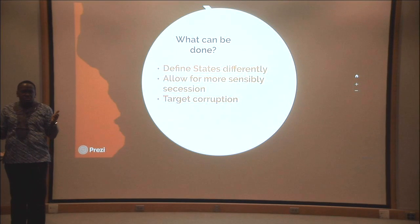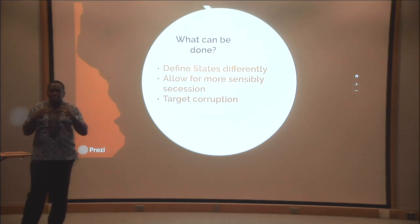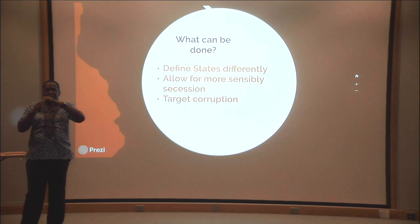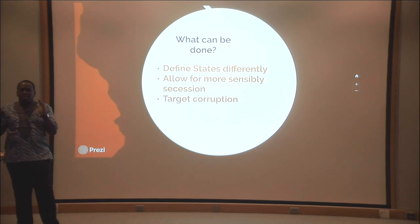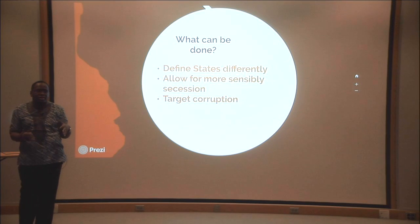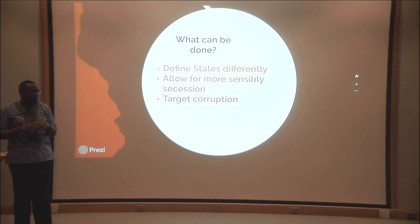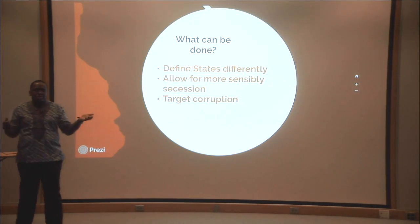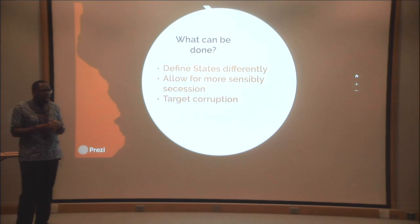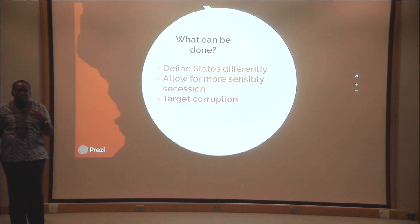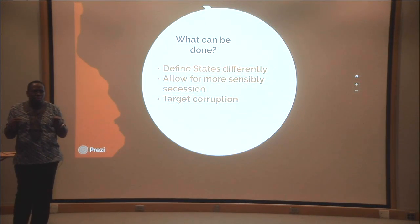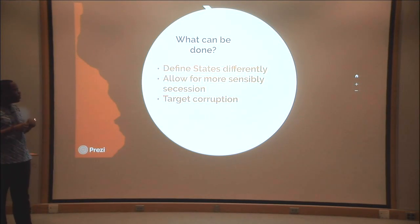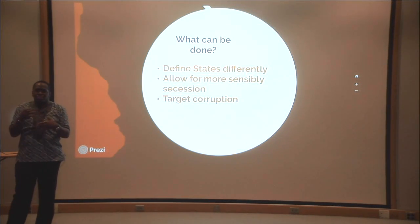The current definition of a state requires boundaries, a government, judiciary, legislative, and executive functions. But before Europeans arrived, Africans didn't have states like that — they had kingdoms or city-states, which worked well for them. When Europeans brought their own definition of statehood, things started breaking apart. So scholars suggest redefining states differently to reduce these problems.